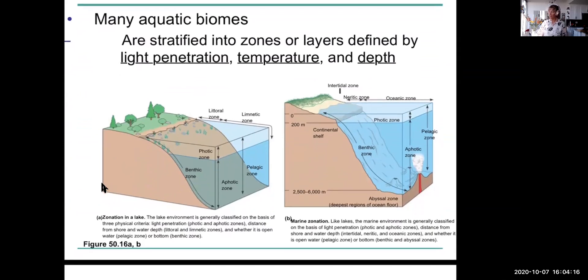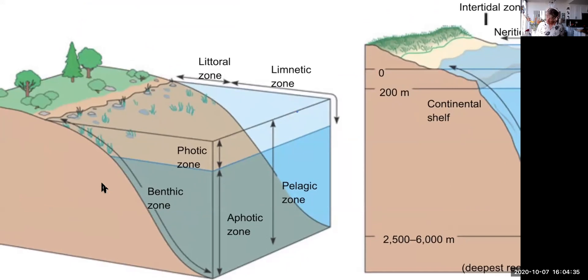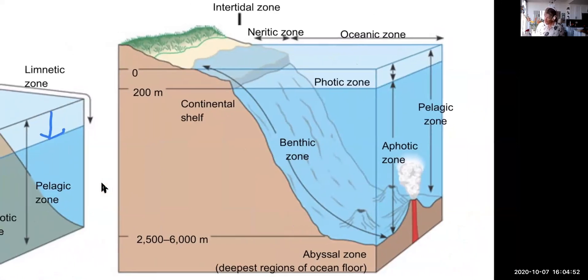So we saw in the lakes that they're somewhat stratified. Here's a further example of stratification. So it depends how far light can penetrate. So in lakes and the ocean, light penetrates only to a certain depth before all the wavelengths are absorbed. And that's called the photic zone. And certain organisms live in the photic zone. So this is the ocean, and this is the photic zone of the ocean, just where light can penetrate.